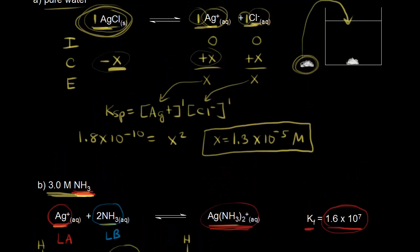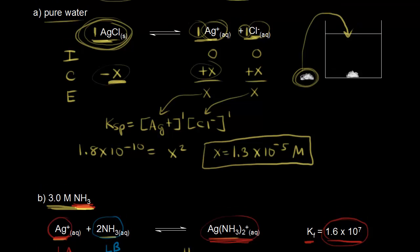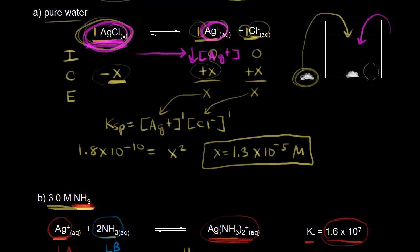If we go back and think about our equilibrium, if we have ammonia present, we're removing silver cations from solution — we're decreasing the concentration of one of our products. Le Chatelier's principle says if we decrease the concentration of one of our products, our equilibrium will shift to the right to make more, therefore increasing the solubility of silver chloride. More is going to dissolve because of the formation of our complex ion. Adding ammonia caused formation of a complex ion, which increased the solubility of our silver chloride.